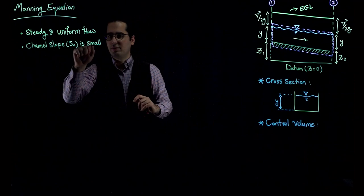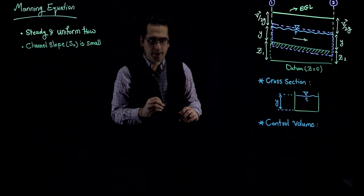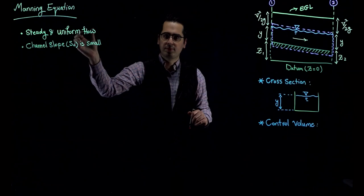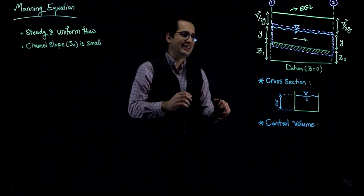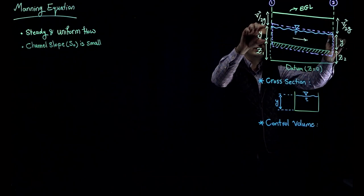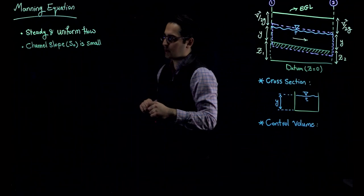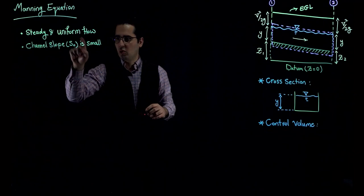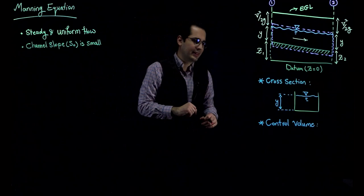Two things to remember. Number one, we are deriving Manning Equation for steady and uniform flow. Steady flow means that the properties of the flow do not change over time, and uniform flow is the flow in which properties of flow do not change over a distance. That's why y in two different sections are exactly the same, and velocity is exactly the same as well. The other assumption is that the channel slope, S sub zero, is small.